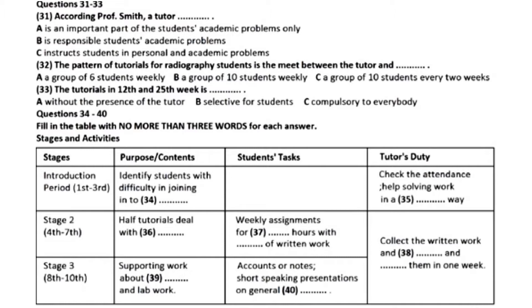Tutorials for physics undergraduates consist of six students who meet each week with their tutor for at least 50 minutes. For radiographer students, tutorials will normally consist of a group of about 10 students who will meet fortnightly with their tutor for a period of at least 50 minutes. In the first semester, the tutorials are during weeks 1 to 11. For semester 2, they are during weeks 14 to 24.